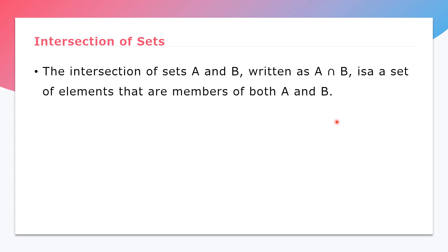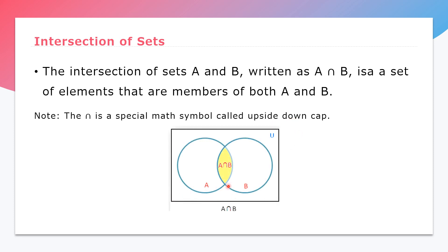Let's now have intersection of sets. The intersection of set A and B, written as A ∩ B (A intersect B), is a set of elements that are members of both A and B. Note this symbol - this intersection is a special math symbol called upside-down cap. If you're going to write it in a Venn diagram, this is an example of intersection. You could see here what is common between A and B, we put it together, so that is their intersection.